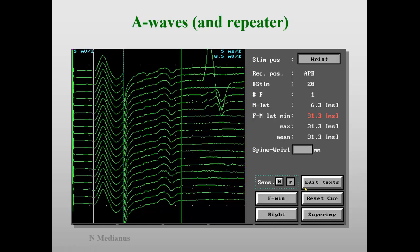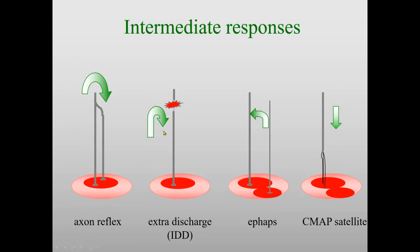Now we go over to something completely different: A-waves, which we see now and then particularly in the tibial nerve — it is nearly normal to see it in 10 to 20% of cases, and in the other nerves much less common. Here is an example: the typical thing is low-amplitude signals like F-waves, but with completely constant latency. They can occur right after the CMAP, within the range where F-responses are seen, or even after the F-response. We see them better when we superimpose traces.